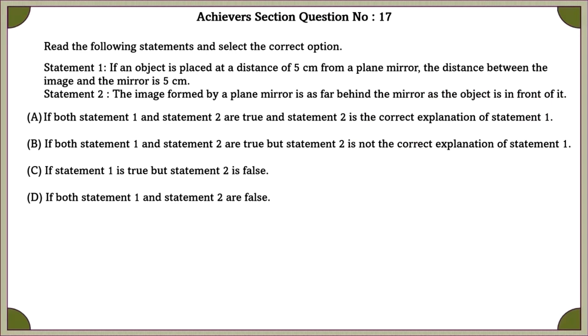Achievers section question number 17. Read the following statements and select the correct option. Statement 1: If an object is placed at a distance of 5 cm from a plane mirror, then the distance between this image and the mirror is 5 cm, which is true. Statement 2: The image formed by a plane mirror is as far behind the mirror as the object is in front of it. Yes, this is also true. And yes, statement 2 is the correct explanation of statement 1.